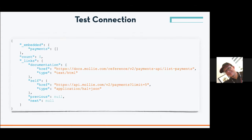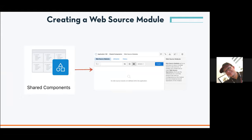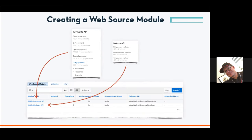In APEX, if you want to consume web services, you need to use Web Source Modules. If you get information from outside you can use Web Source Modules to make a kind of API from it. From the Shared Components you can go to the Web Source Modules and create them. There were two APIs: the Payments API and the Methods API — those are the two mostly used in my application. Per API we create a Web Source Module, which is sort of like an API hook — a representation of the API in APEX that you use from APEX.